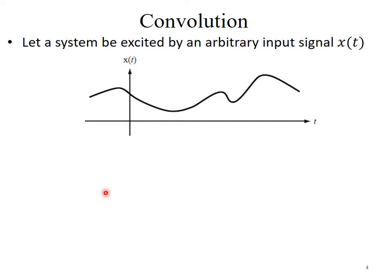Consider an input signal x(t), which is a continuous time domain signal that varies with time. To analyze any system by applying this input using the convolution integral, we must represent this signal as a linear combination of impulses.